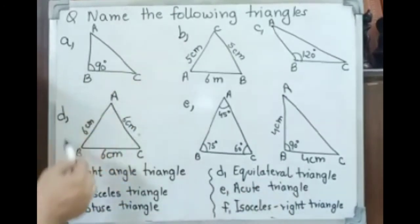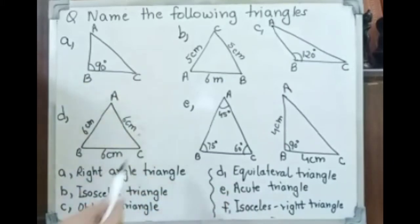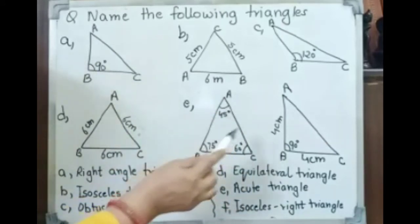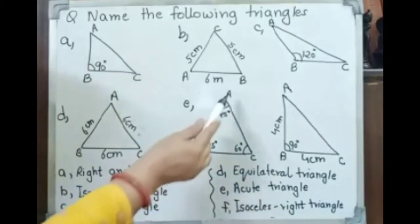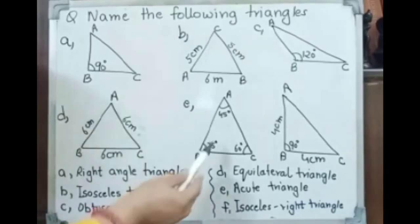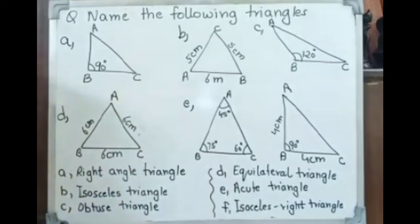When all sides are equal, that is called an equilateral triangle. Triangle E has sides AB, BC, and AC. Here we have only angles, no lengths shown. Angle A is 45 degrees, angle C is 60 degrees, and angle B is 75 degrees. Since 75 degrees is less than 90 degrees and all angles are less than 90 degrees, this is an acute triangle.